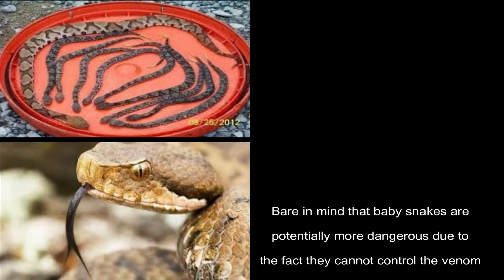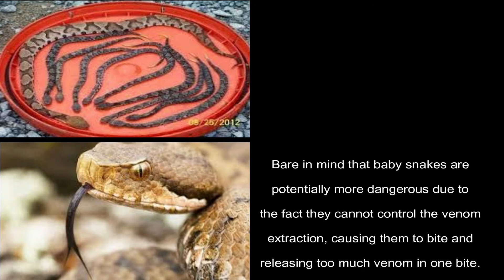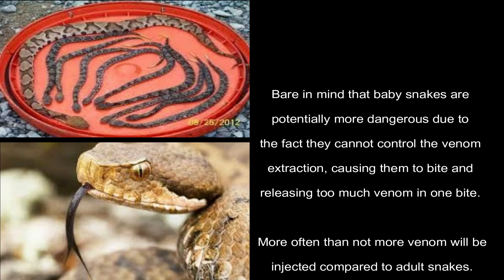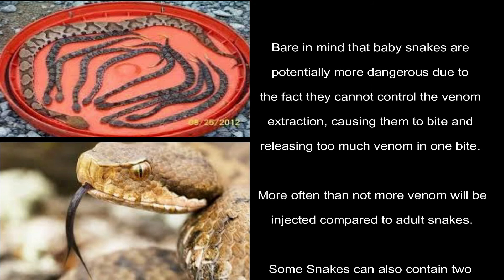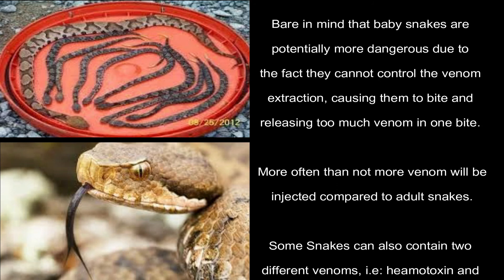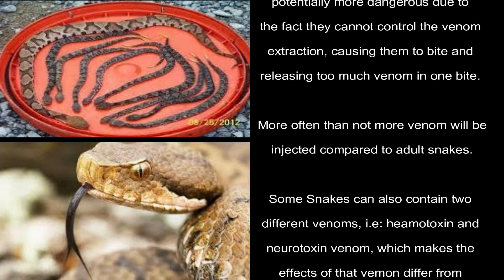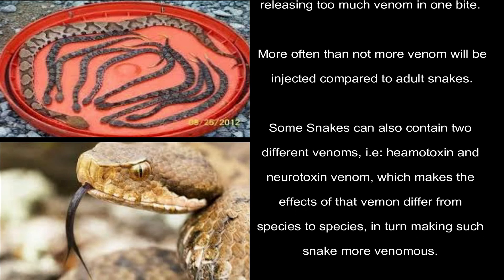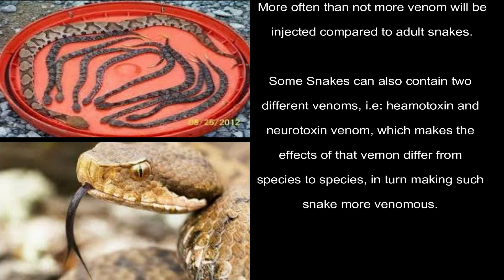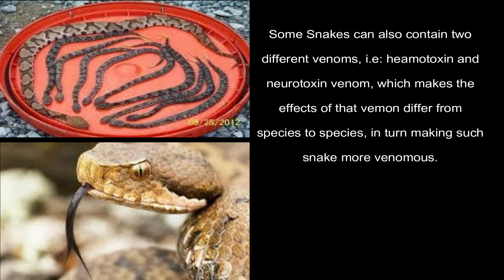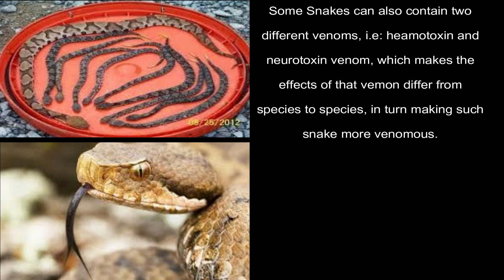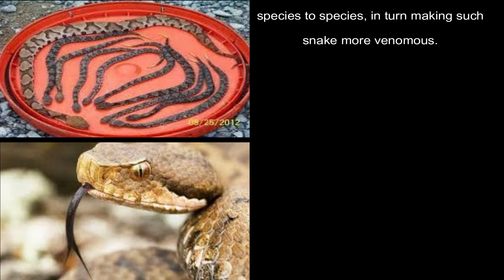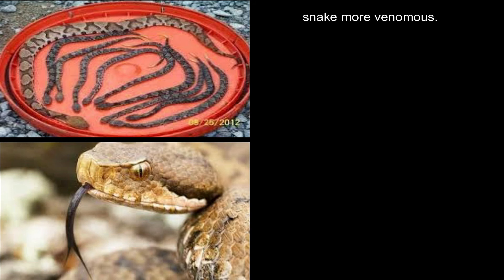We must bear in mind that baby snakes are potentially more dangerous due to the fact that they cannot control venom extraction, causing them to bite and release too much venom in one bite. More often than not, more venom will be injected compared to adult snakes. Some snakes can also contain two different venoms — for example, hemotoxic and neurotoxic venom — which makes the effects differ from species to species, in turn making such a snake more venomous.